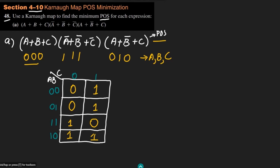To find the simplified or minimum POS, I have to gather the zeros in groups of 2, 4, or 8. Looking at the first entry (0,0,0), I can see the constant terms: A remains 0 and C also remains 0. So I add them together — A + C — and this is the first sum term.